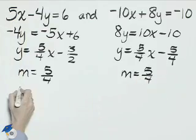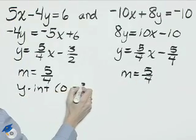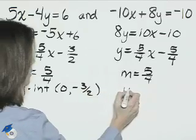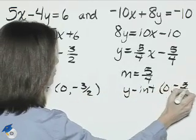But the y-intercepts are different. Here, the y-intercept is negative 3 halves. And the y-intercept here is 0, negative 5-fourths.